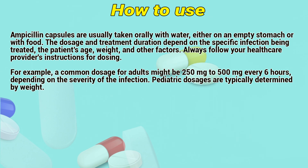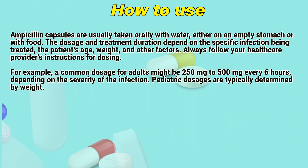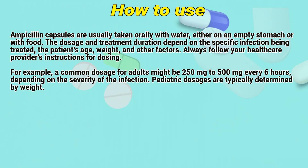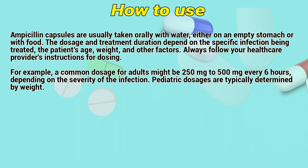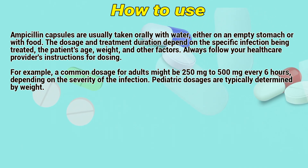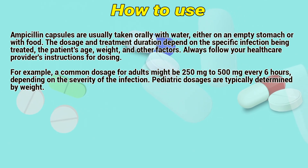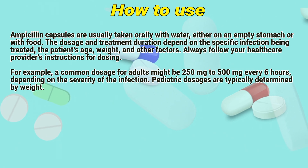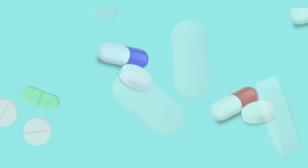Ampicillin capsules are usually taken orally with water, either on an empty stomach or with food. The dosage and treatment duration depend on the specific infection being treated, the patient's age, weight, and other factors. Always follow your healthcare provider's instructions for dosing. For example, a common dosage for adults might be 250 mg to 500 mg every 6 hours, depending on the severity of the infection. Pediatric dosages are typically determined by weight.